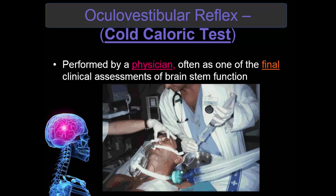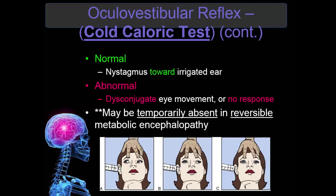The oculovestibular reflex, also called the cold caloric test, is performed by a physician only and is usually the final clinical assessment of brain stem function. Basically, they inject cold ice water into the ear and watch for nystagmus or deviation of the eyes. A normal finding shows appropriate eye movement. An abnormal finding would be disconjugate eye movement or no response — if they stay midline or deviate to the opposite ear, that is an abnormal response.